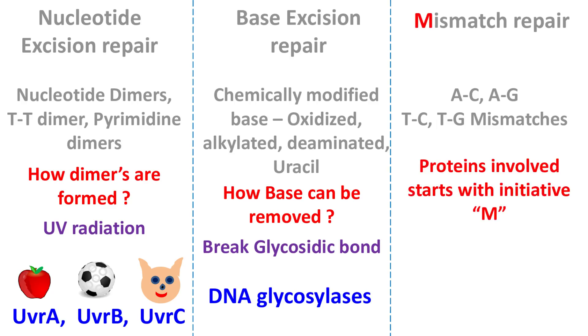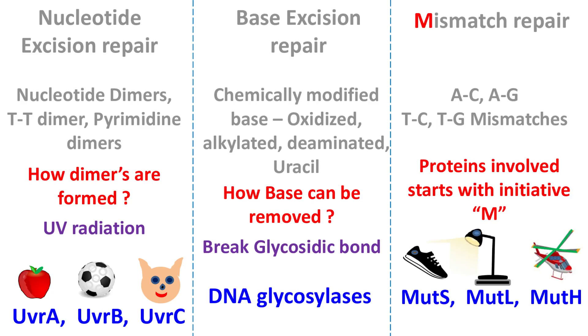And finally, in Mismatch Repair, the proteins involved start with the initials of 'Mut'. These are MutS, MutL, and MutH.